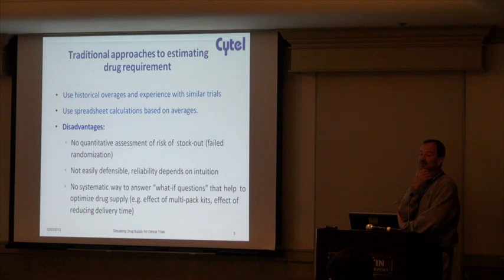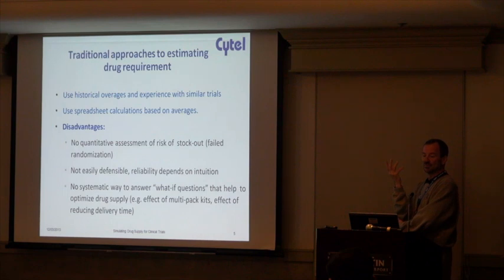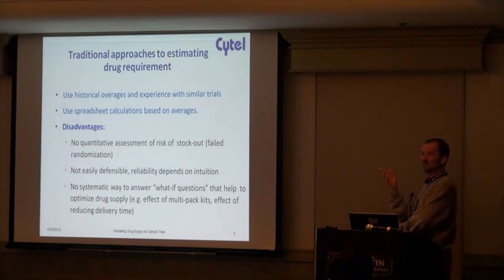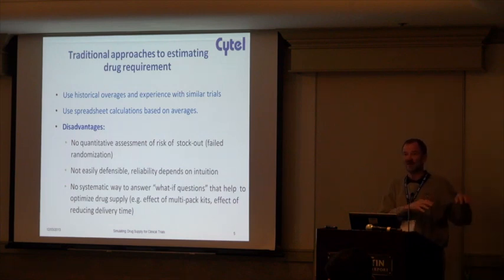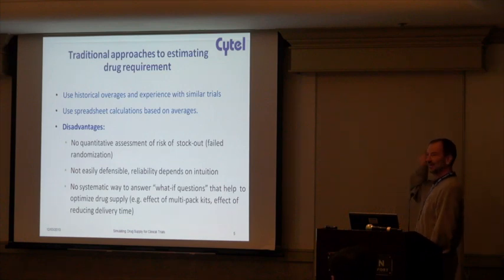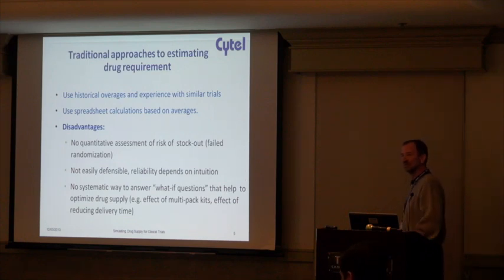The traditional approaches have been to just use historic overage amounts and experience. Each drug supply person has his own spreadsheet — a different spreadsheet for each trial he worked on in the past — and he knows that in his mind and says we need about this much overage historically.